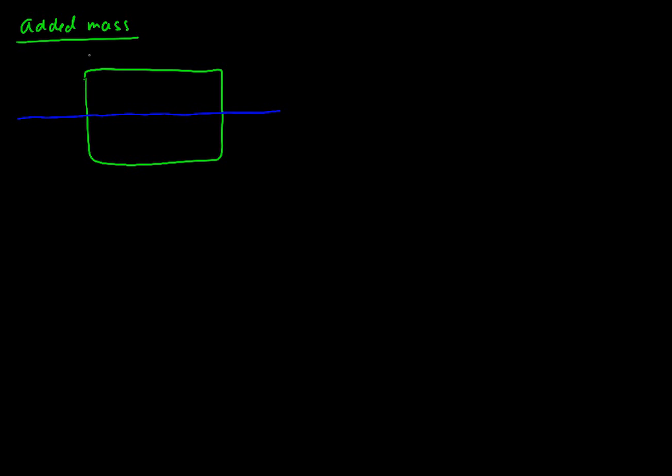Then we could say this is the beam of the vessel B. And we have the draught of the vessel D over here.